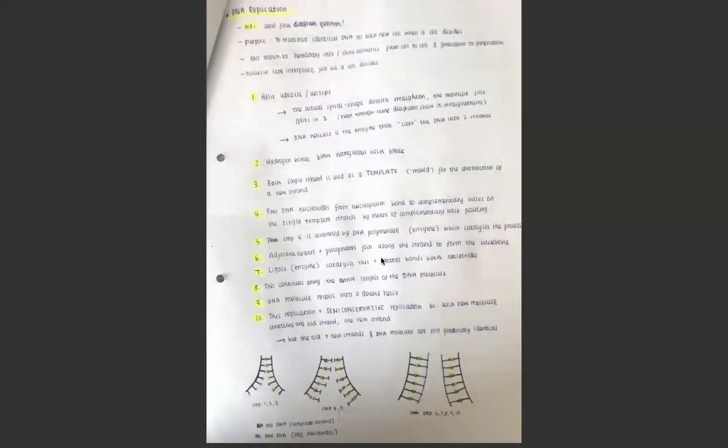DNA replication is probably the most important part of this section of DNA. It's a very good flow diagram question. They'll often ask it or just ask a section of it. I advise you strongly to learn this flow diagram. Make sure you know it well, put it up on your mirror when you're brushing your teeth so you can learn it. The purpose of DNA replication is to transmit identical DNA, exact copies of DNA, to each new cell when a cell divides. This transmits the genetic information, the hereditary information from cell to cell and from generation to generation. DNA replication occurs in late interphase, just before the cell starts dividing. It's the first step in mitosis.